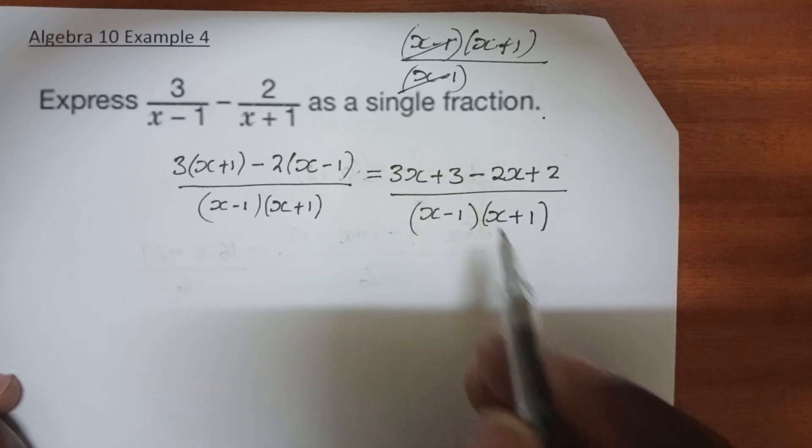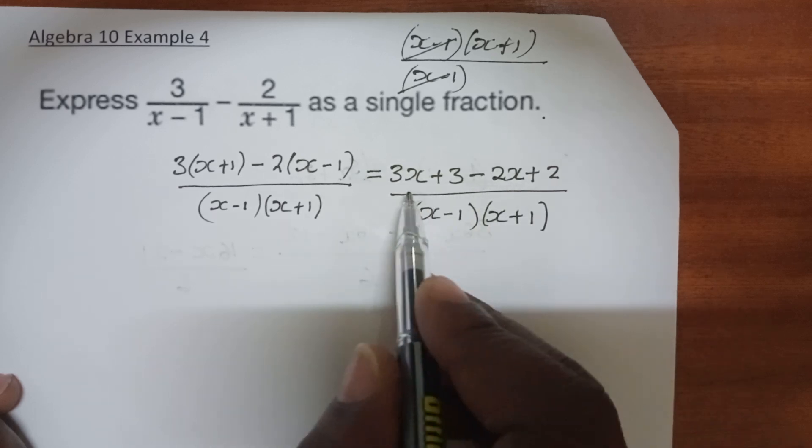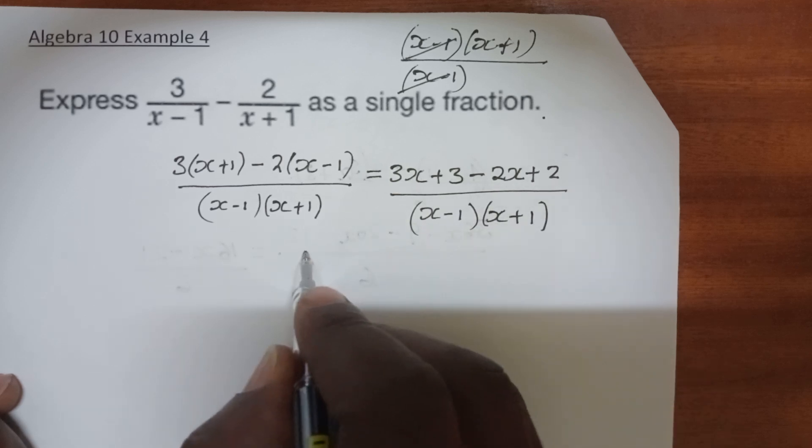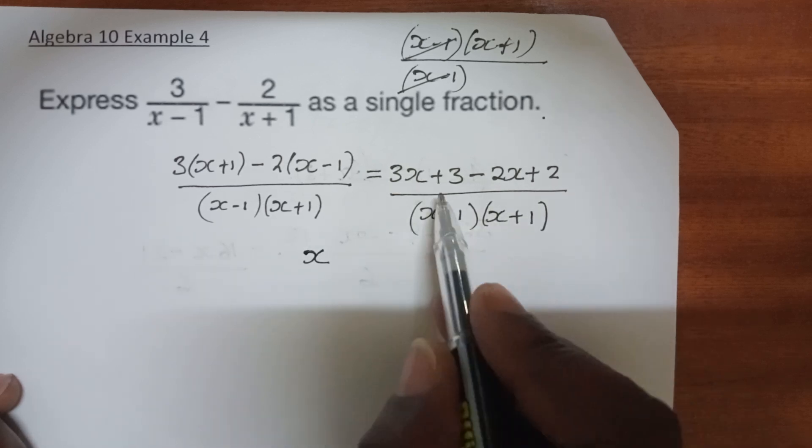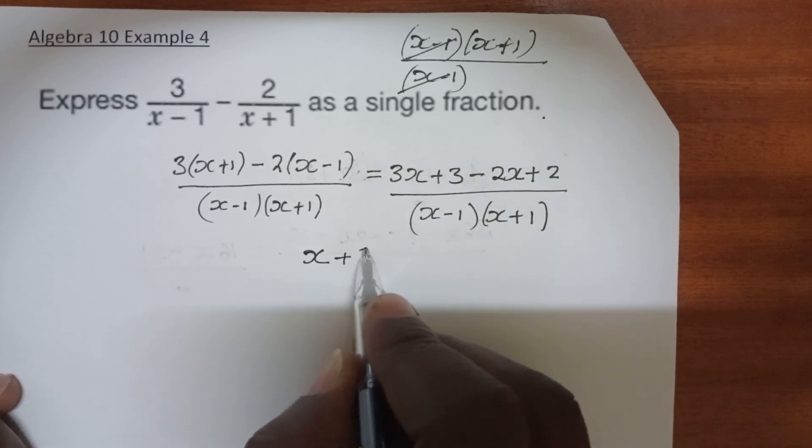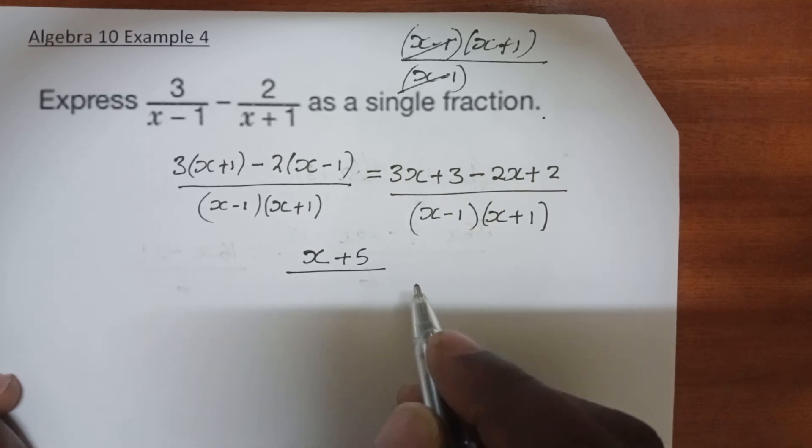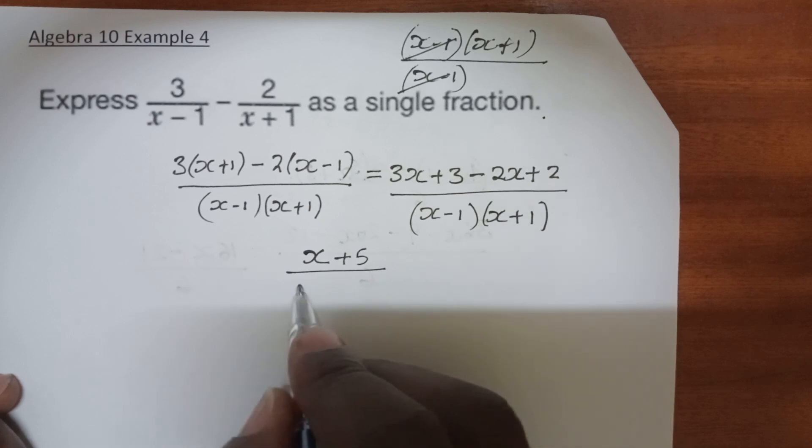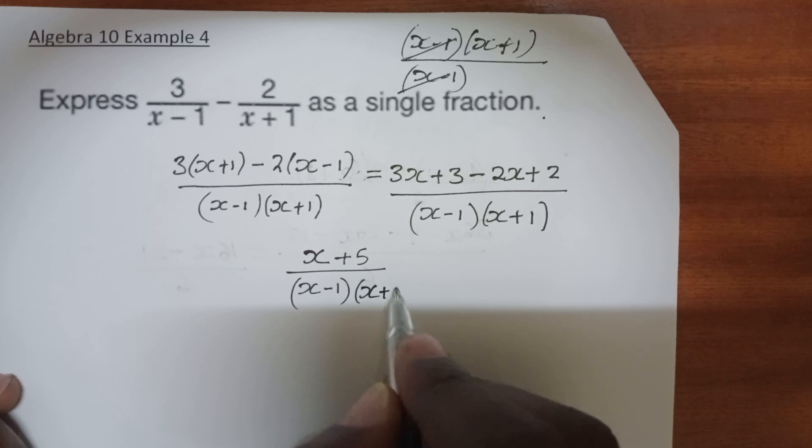We have now to collect the like terms at the numerator. We have 3x minus 2x, that gives you x. And 3 plus 2 gives you a positive 5. Everything over (x-1)(x+1).